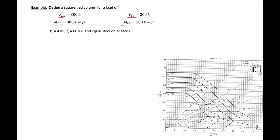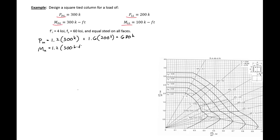The first thing we need to do is combine these to find our ultimate factored axial load. Using an ACI load combination: 1.2 times 300 kips plus 1.6 times 200 kips gives us a Pu of 680 kips. We can do the same to find our moment demand: 1.2 times 300 kip-feet plus 1.6 times 100 kip-feet gives us 520 kip-feet, or 6,240 kip-inches.